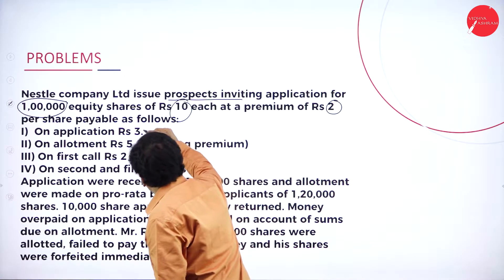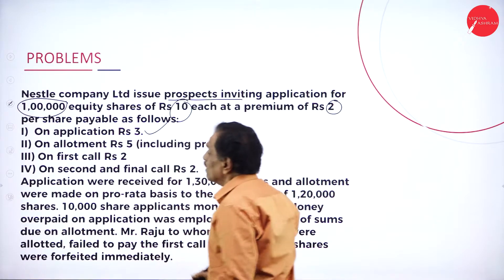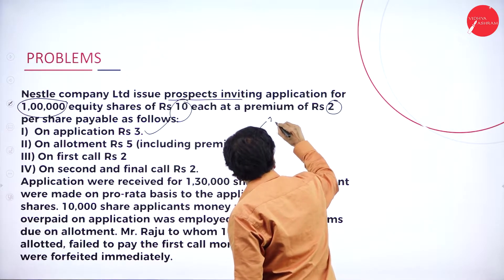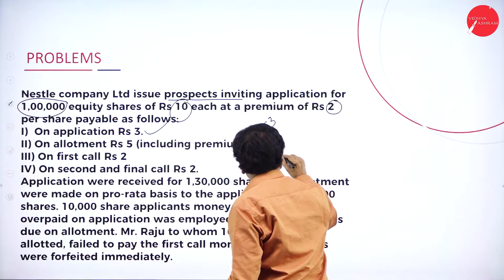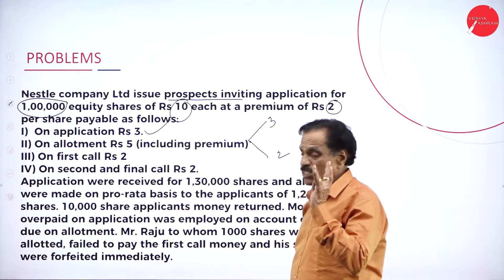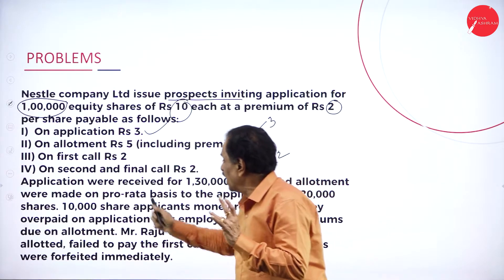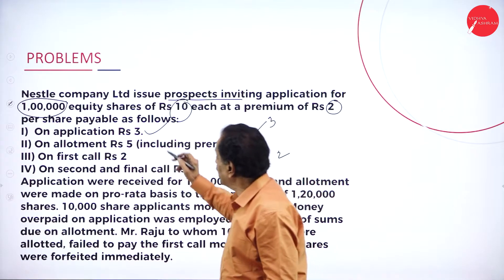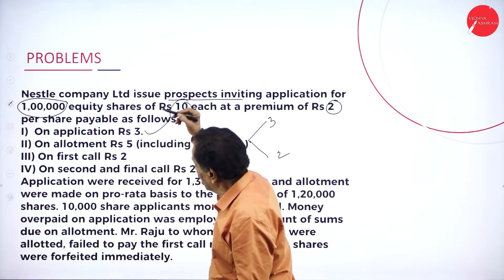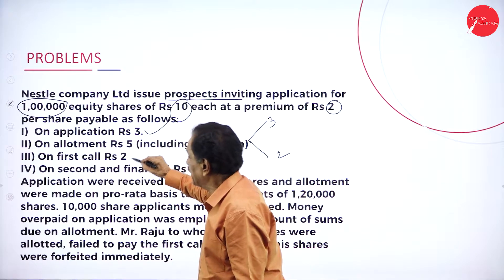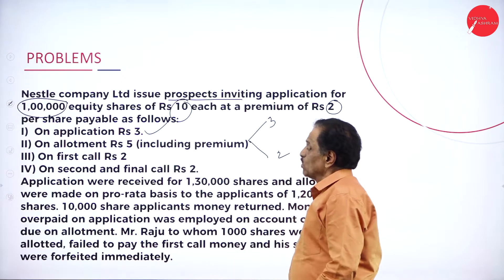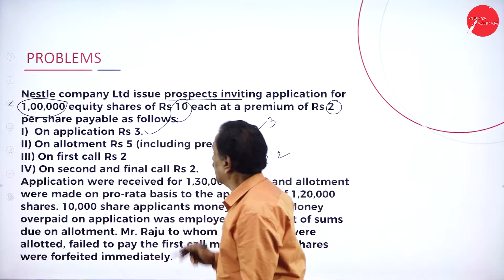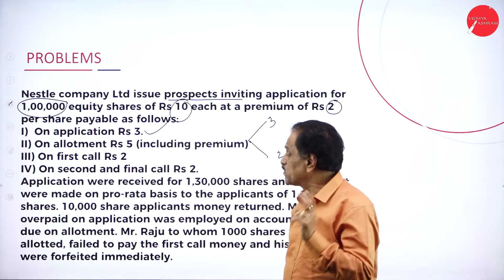Payable: 3 on application, 5 on allotment, 2 on first call, 2 on final call. So 5 plus 3 is 8, plus 2 is 10, plus 2 is 12 — meaning rupees 2 is the premium.